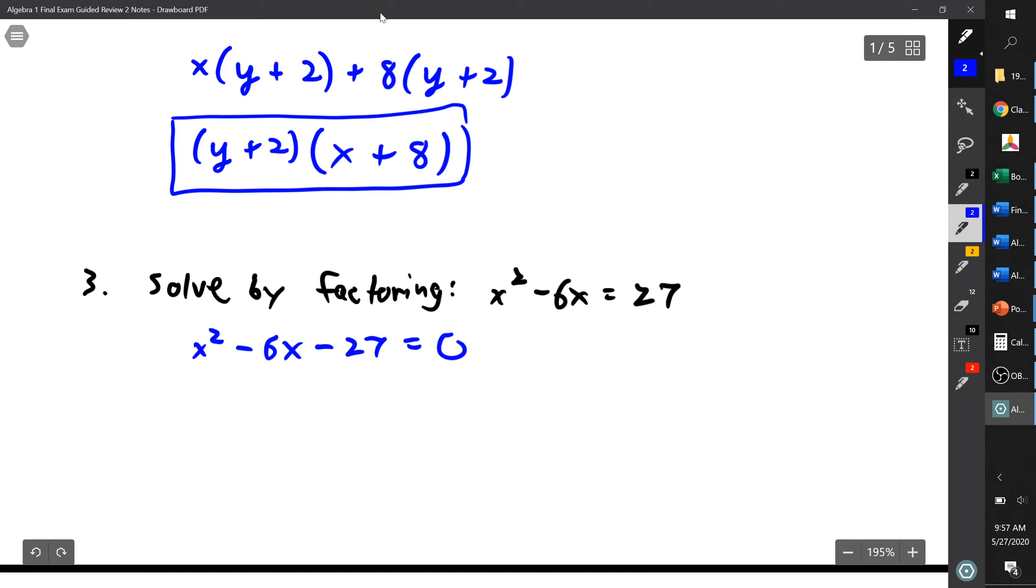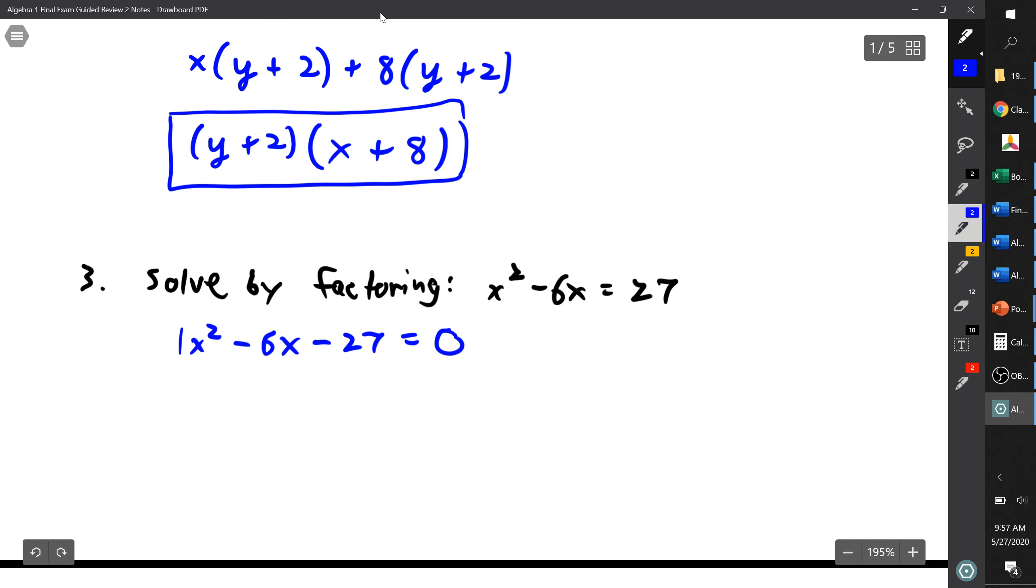Now I notice I have three terms: I have an x squared term, an x term, and a constant. And I note that the x squared term is a 1x squared. So when that's the case, I can just take this constant, this negative 27, and I'm going to look for two numbers that multiply to be negative 27 and add to be negative 6.